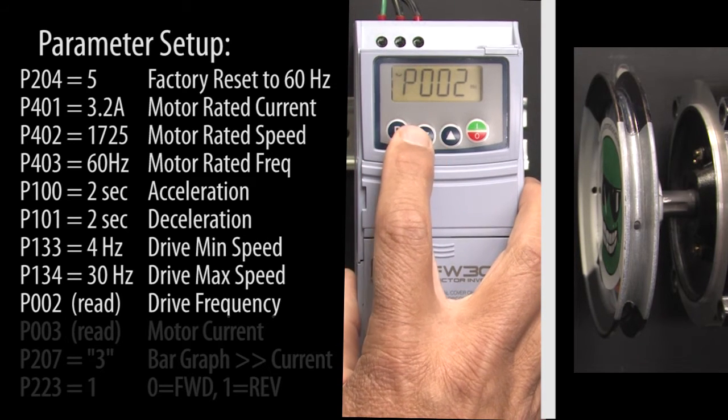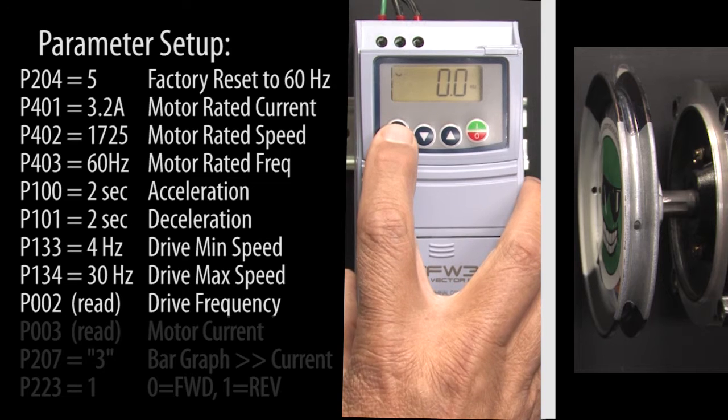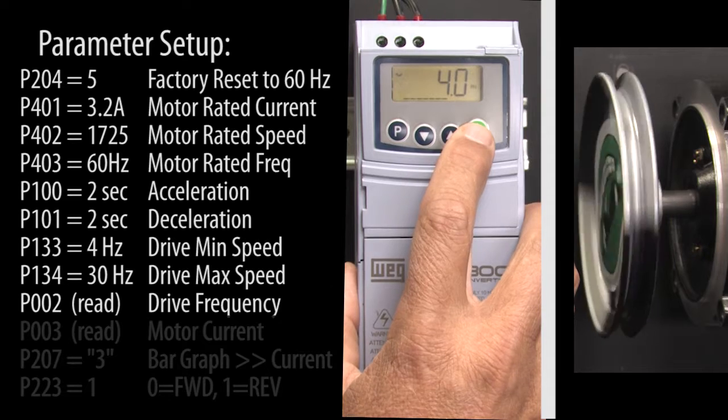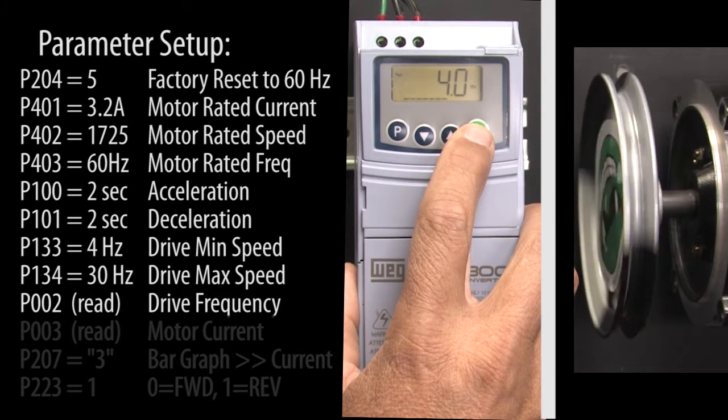Scroll to parameter 2 which shows us the drive's output frequency and press the run stop key to start the motor. And sure enough, the drive ramps the motor to the 4 Hz minimum output frequency we just entered. Perfect.